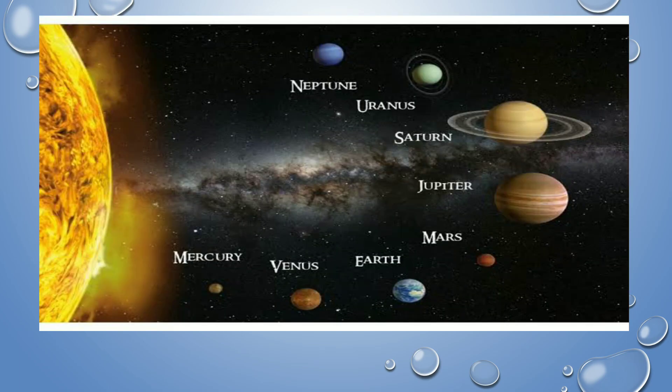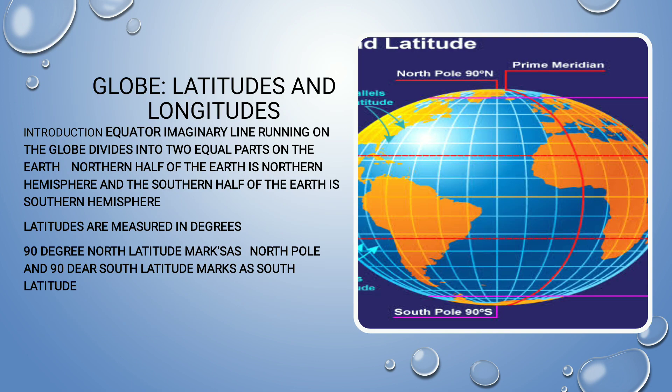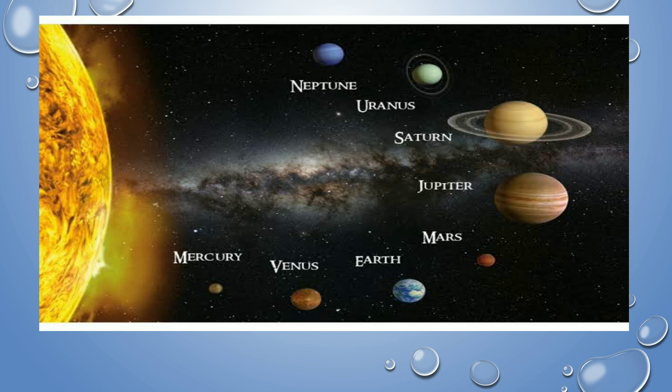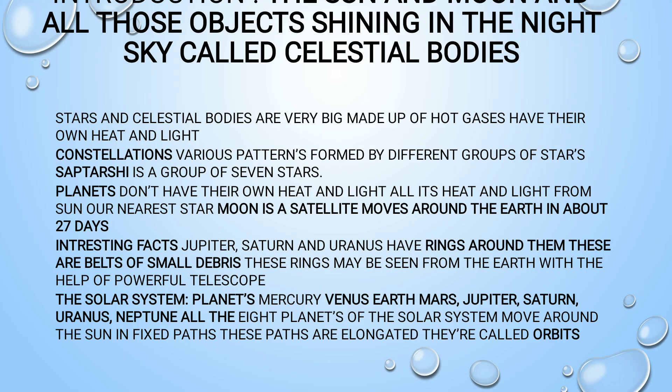Here is the representation: Jupiter, Saturn, and Uranus each have belts of small debris as rings around them. These rings can be seen from Earth with the help of a powerful telescope.